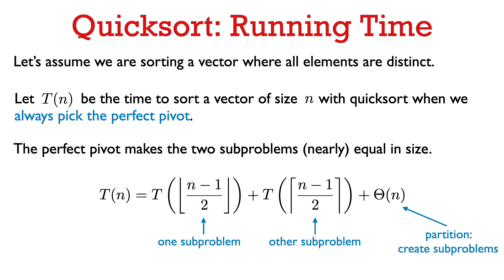Under that assumption, after partition the pivot is in the correct place and we don't need to worry about it anymore. Since the pivot is the median, to its left we'll have roughly (n-1)/2 elements, and to its right also roughly (n-1)/2 elements.